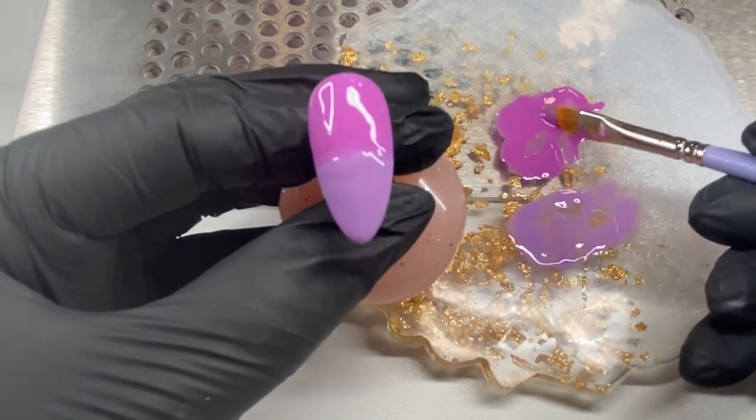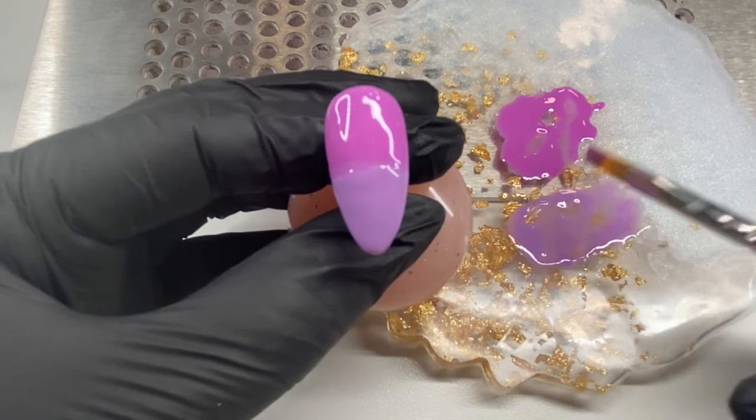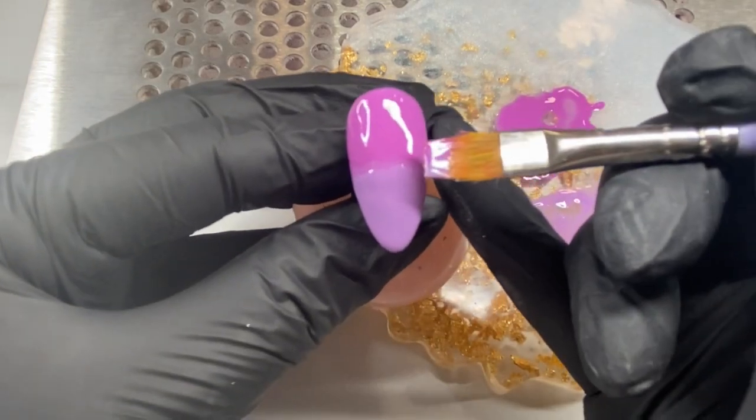We're going to do the same thing again with our ombre brush. Pick up a little bit of each color and start going through the center of the nail.